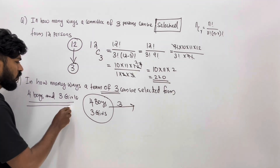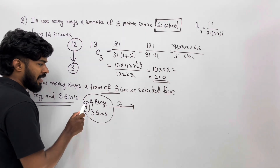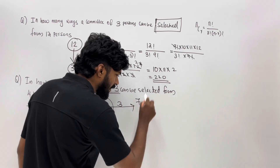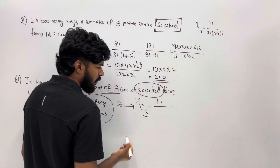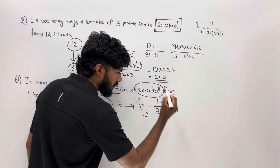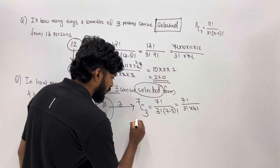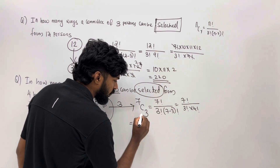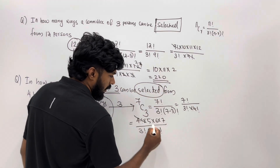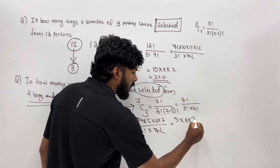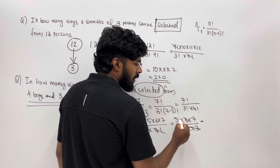How many total? Three girls and four boys — we are selecting three. Let's try this: 7C3 by the factorial formula. Seven factorial by three factorial equals seven minus three factorial. Then seven factorial by three factorial equals four factorial. So 7 factorial expands: 4 factorial, 5, 6, 7. And 3 factorial is 1 into 2 into 3, which equals 6. So 5 into 7 gives us the answer.